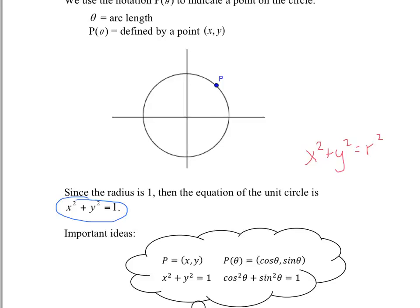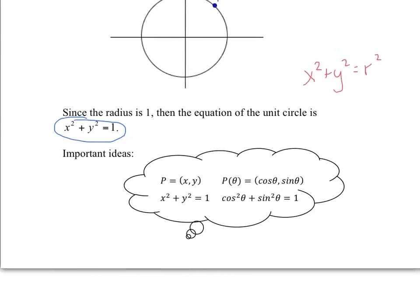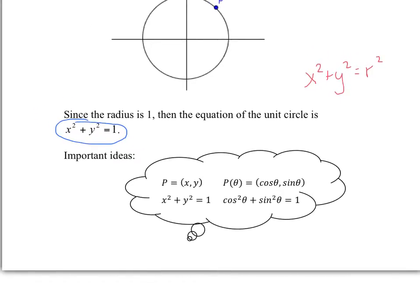We're going to make connections: the cosine value is the x value, and the sine value is the y value. Because any point of an angle — you can have cosine of that angle and sine of that angle — will give you the x and y coordinates. Since that's true, you could also say cosine squared plus sine squared equals 1, and that's where that comes from.